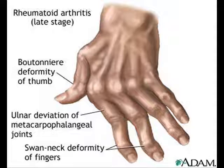Arthritis can affect the temporomandibular joints the same way it affects other joints. Osteoarthritis, the degenerative joint disease, is a type of arthritis in which the cartilage of the joints degenerates. It is most common in older people.